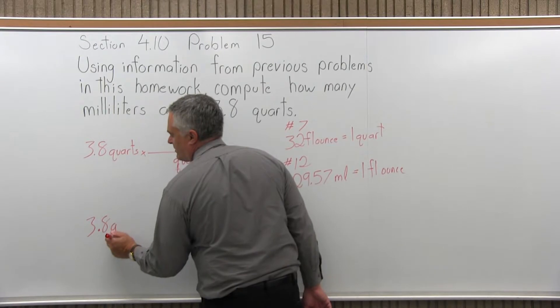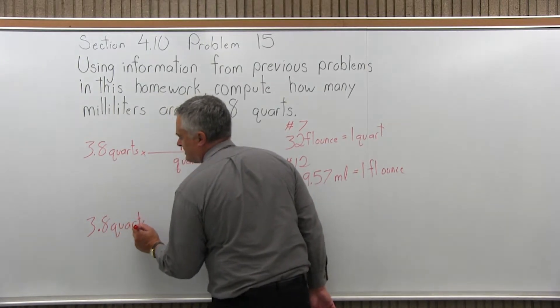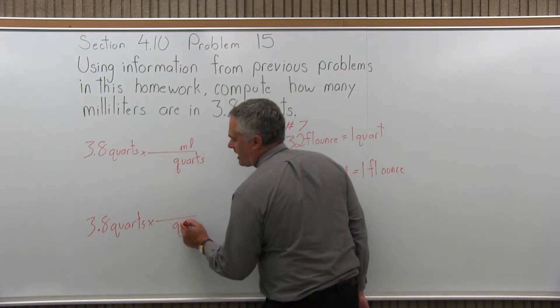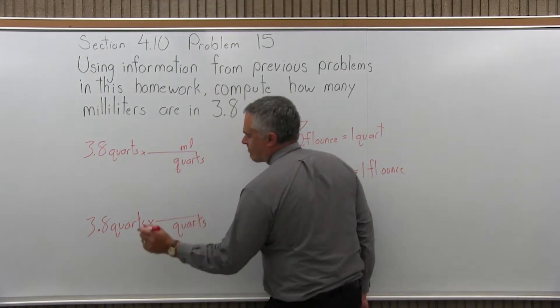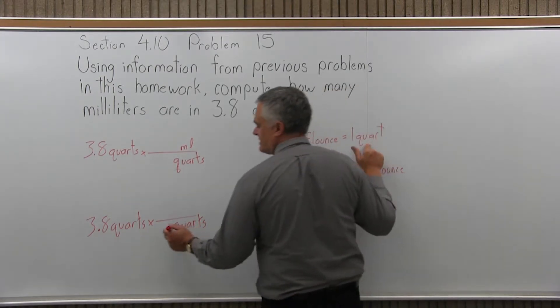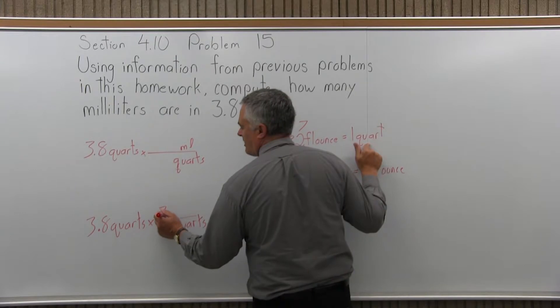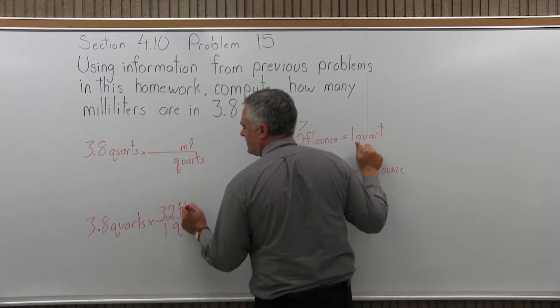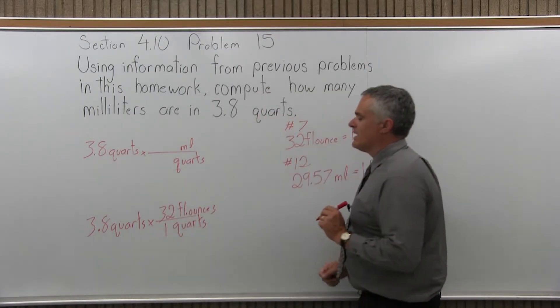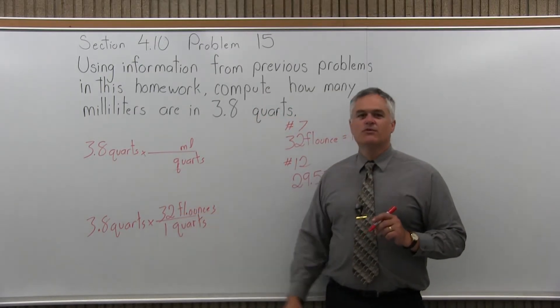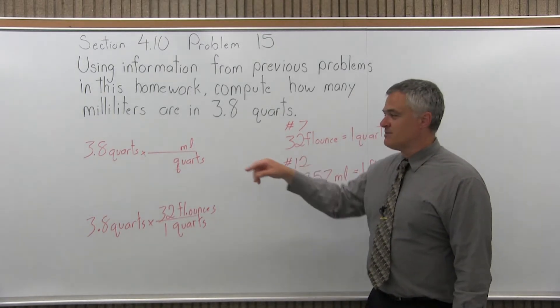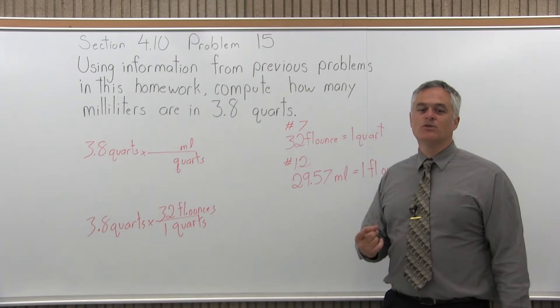I want quarts to cancel. Plus I want milliliters to be my new unit. So let's start with 3.8 quarts. And I'm going to multiply that times something with quarts in the bottom. So what do I have with quarts? What I have is 1 quart is 32 fluid ounces. So 1 quart goes on the top, 32 fluid ounces. And again, I abbreviate a little bit.